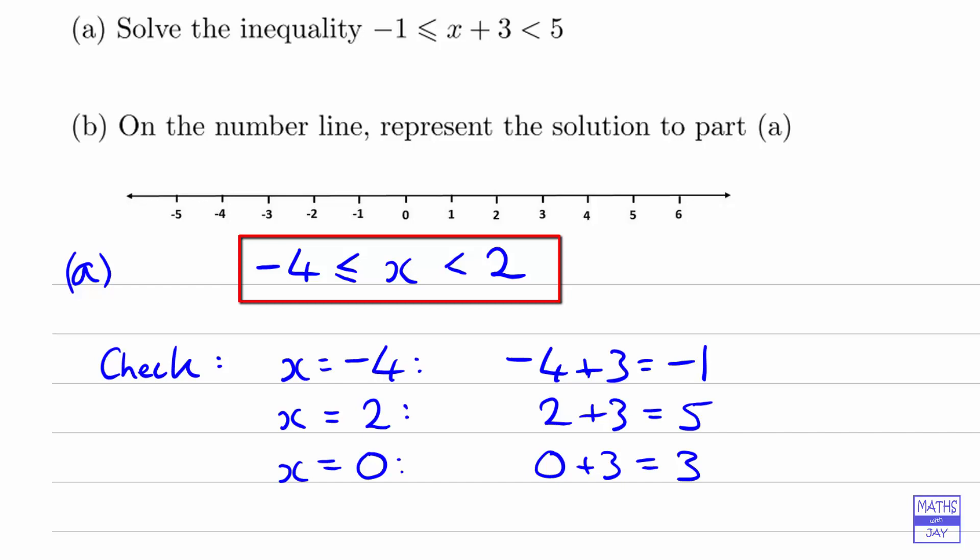We would draw a circle around -4 and one at 2, and then we need to think whether or not we need to fill in either of these circles. And we do want to fill one of them in. When we've got equality, that's when we want to fill in the circle, and we've got equality at -4, so we want to fill that in.